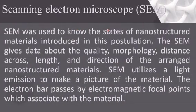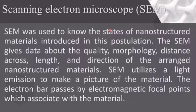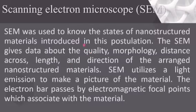Scanning electron microscopy (SEM) was utilized to study the shape of nanostructured materials. SEM gives information about the quality, morphology, diameter, length, and orientation of the prepared nanostructured materials. SEM uses a beam of electrons to make an image of the material.